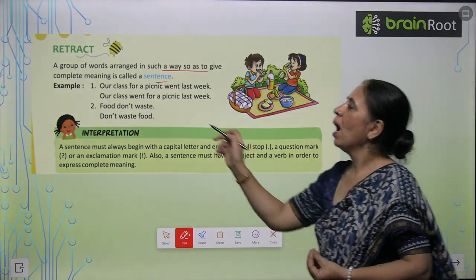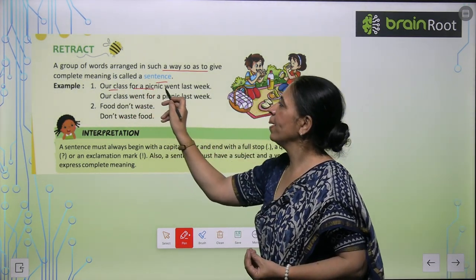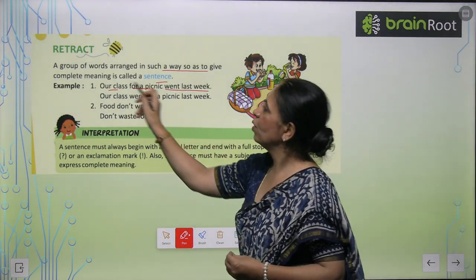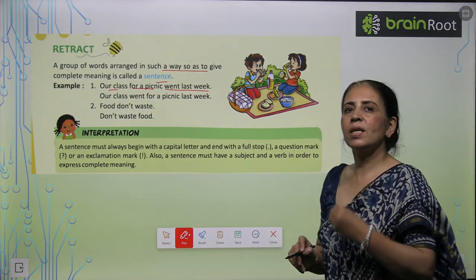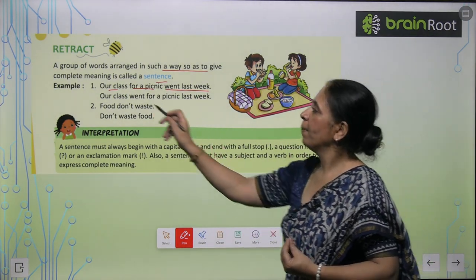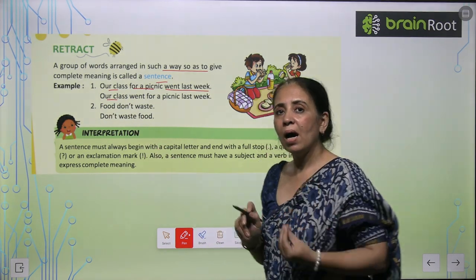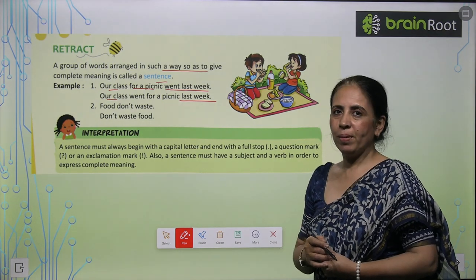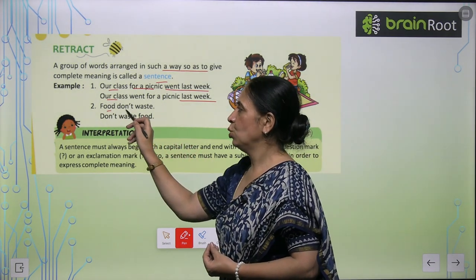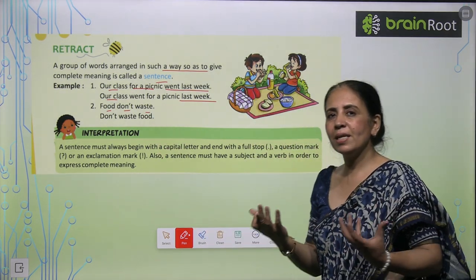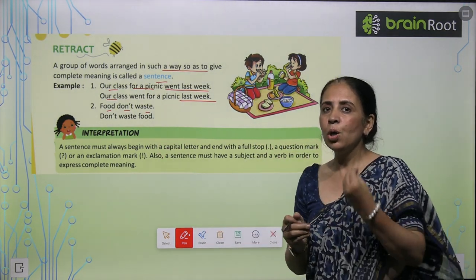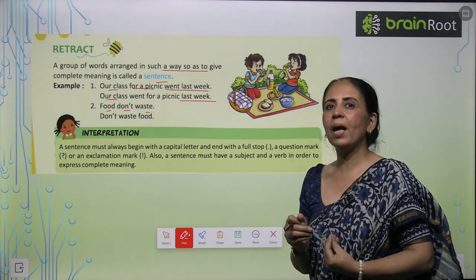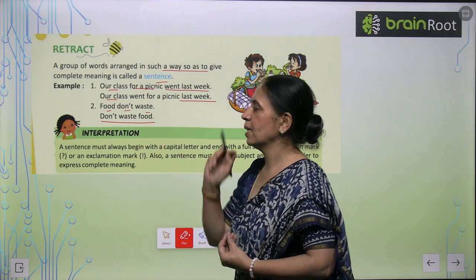I will give you an example. 'Our class for a picnic went last week' — if we rearrange these words, it becomes: 'Our class went for a picnic last week.' Now look at another combination: 'Food, don't waste' — it has no sense. But if we write 'Don't waste food,' it is a proper arrangement of words and a correct sentence.